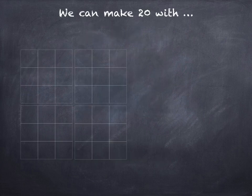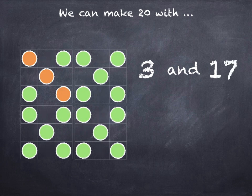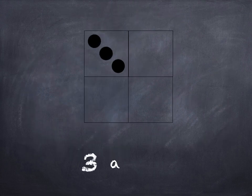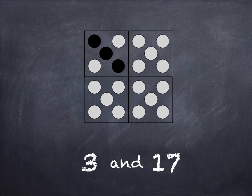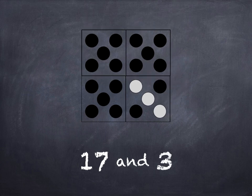We can make 20 with 3 and 17, and also with 17 and 3.